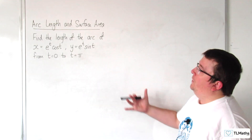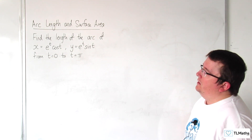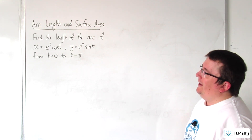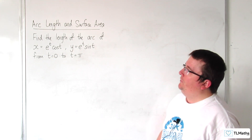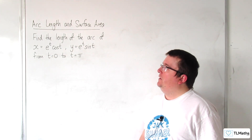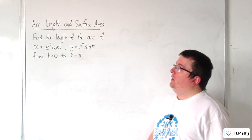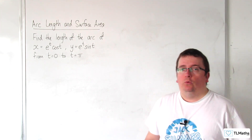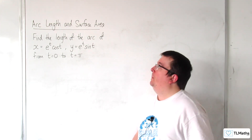In this video, we're going to find the length of the arc of x equals e to the t cosine t, y equals e to the t sine t, from t equals 0 to t equals pi.